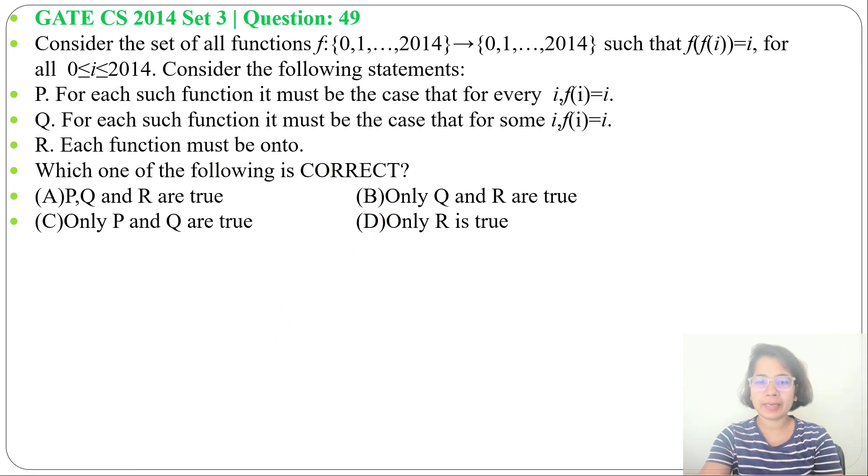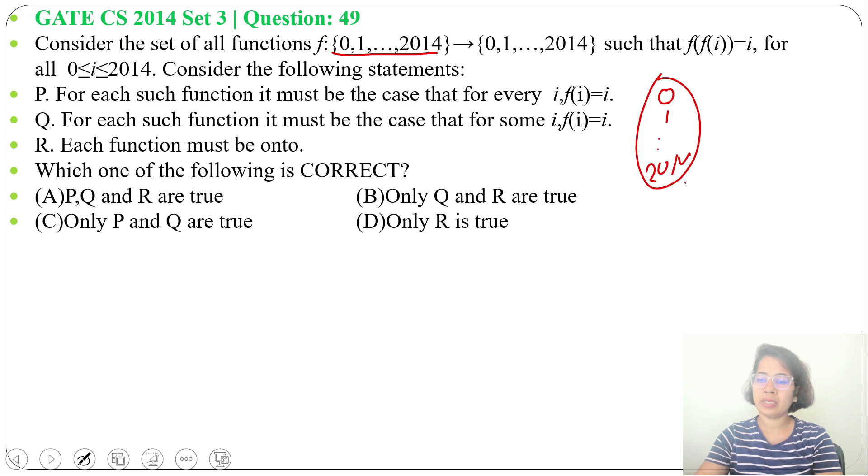So it is saying there is a function from 0 to 2014, means one set contains 0, 1 till 2014, another set contains 0, 1, 2 till 2014. So there is a function from, let's say set A to set B, such that f(f(i)) = i.